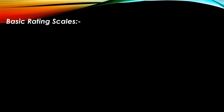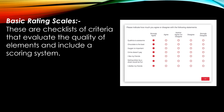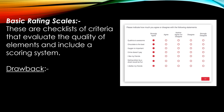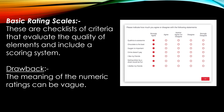Basic rating scales are checklists of criteria that evaluate the quality of elements and include a scoring system. The main drawback with rating scales is that the meaning of the numerical ratings can be vague. Without descriptors for the ratings, the rater must make a judgement based on their perception of the meanings of the terms.